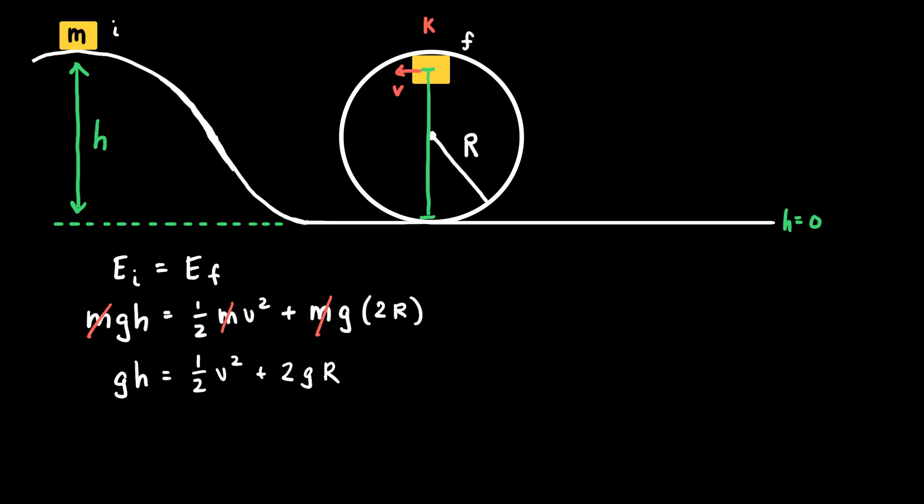So far, I've written this conservation of mechanical energy equation, and I've said that the v in this equation represents the minimum speed to traverse the top of this loop, but I haven't actually put anything into the equation that fits that criteria of it being the minimum speed. And so how do I plug in something that allows us to know that the speed that I'm plugging in is the minimum speed?